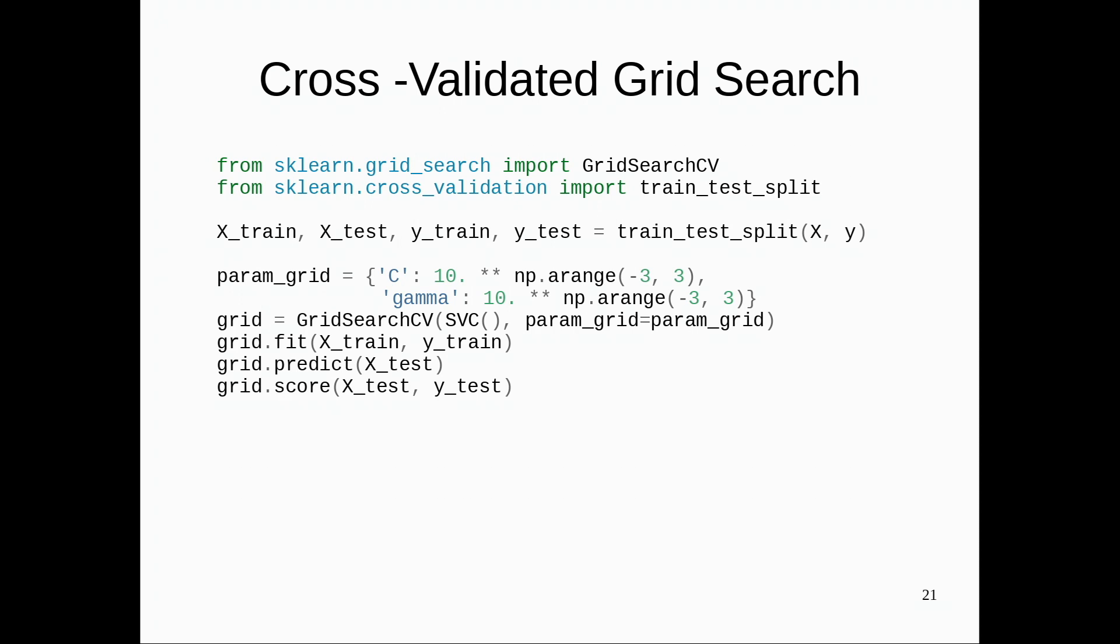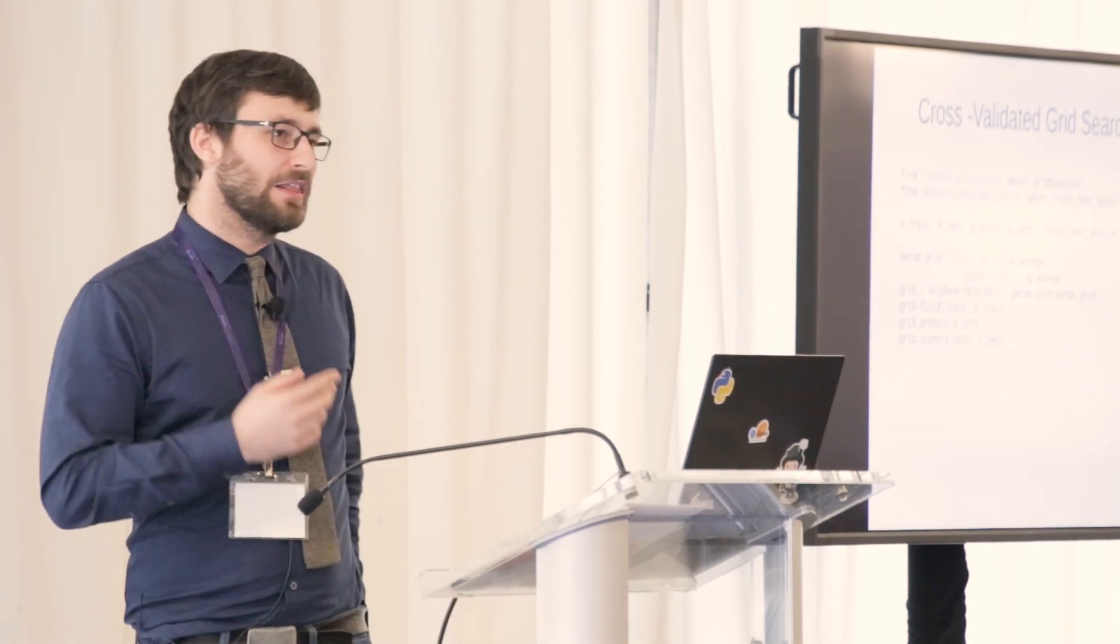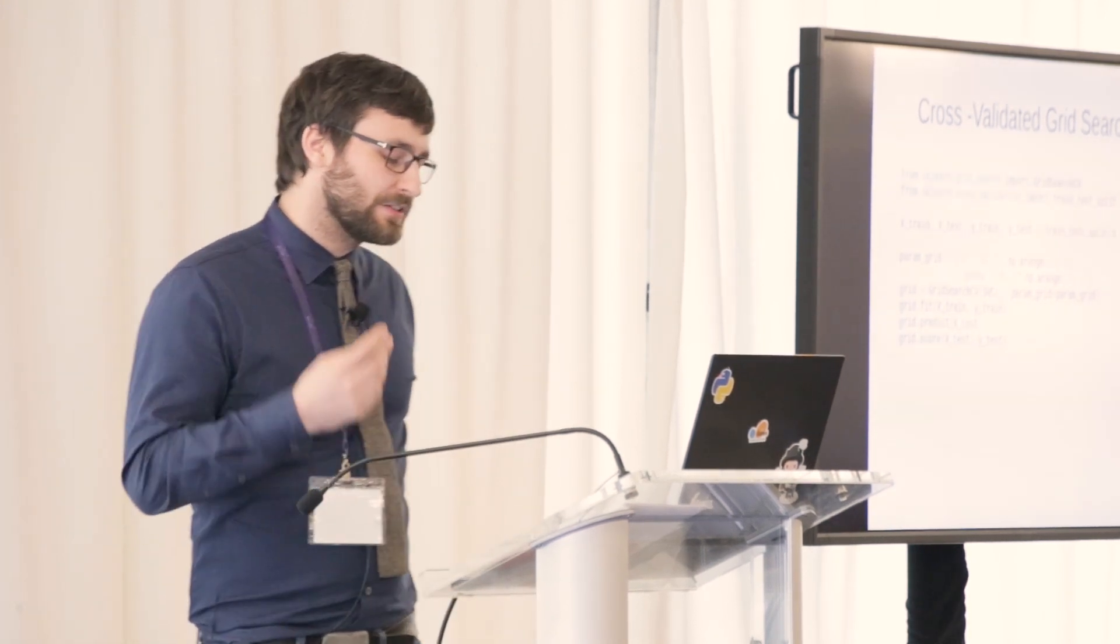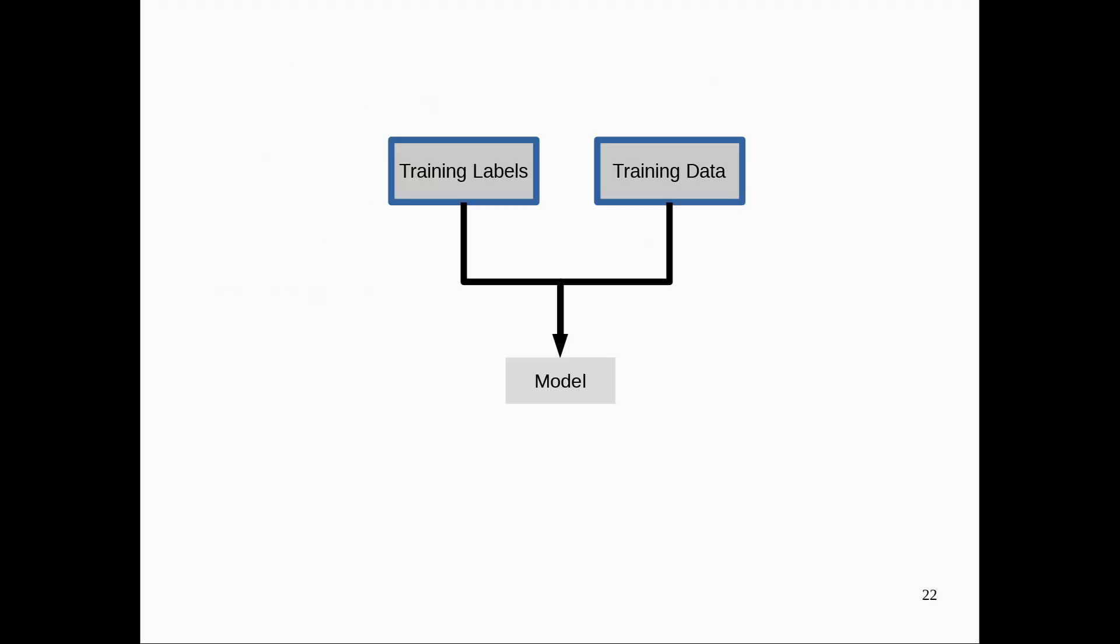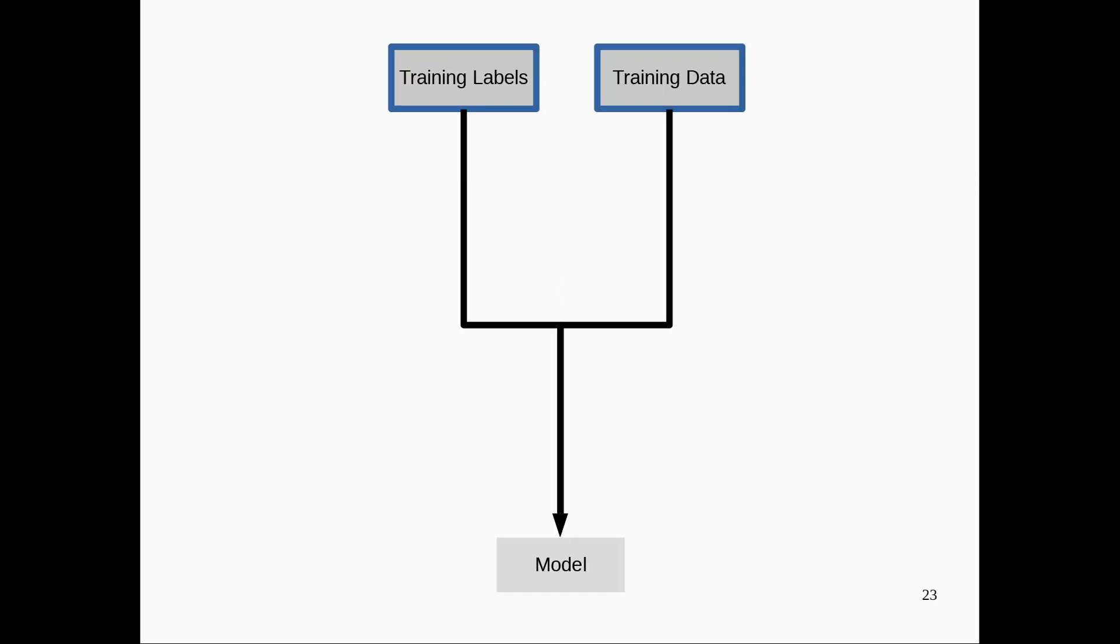So one thing I mentioned is that scikit-learn doesn't really automatically do any preprocessing. And one of the reasons to do this is because you want to really have control over what is happening. Like how do you want to encode your variables? How do you want to impute data and so on? And so more often than not, instead of taking your training data and your training labels and building a model, there's a lot of things happening in between. Like extracting features from text data or images or whatever you have, rescaling your data in the way that you think makes sense for your data set, possibly doing automated feature selection and so on. And then it all goes into your model.